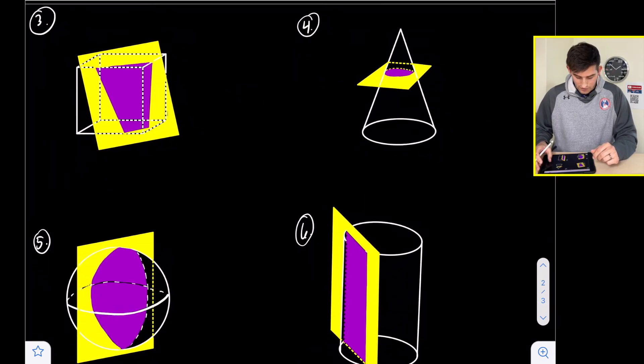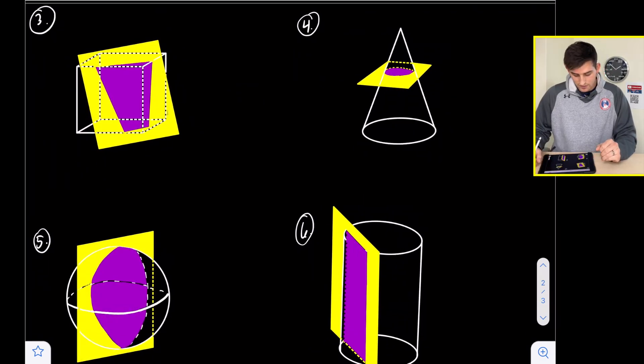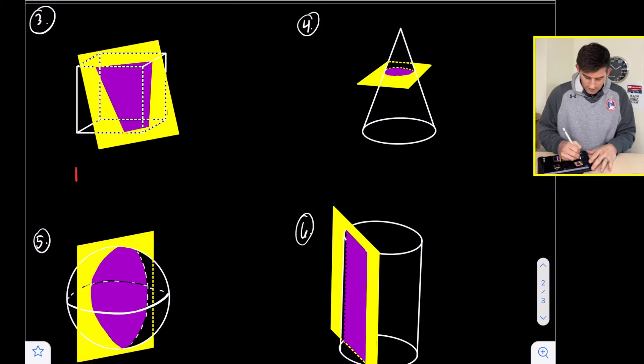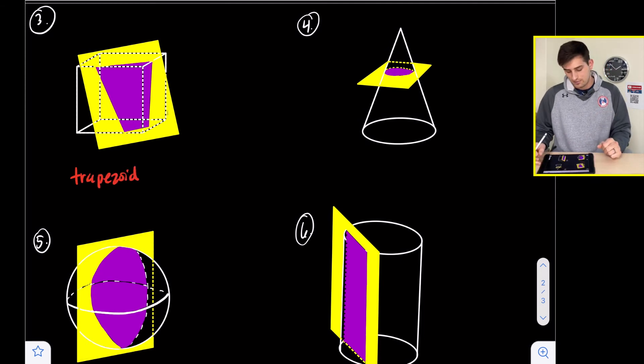Number three, we have a cube once again, but now we are slicing it at an angle from top to bottom. Notice the purple section here—it is creating a trapezoid cross section.